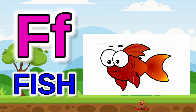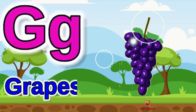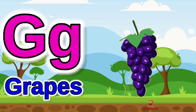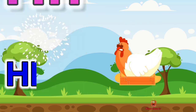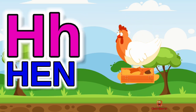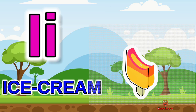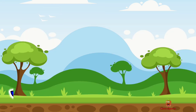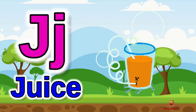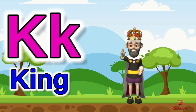F for fish, G for grapes, H for hen, I for ice cream, J for juice.